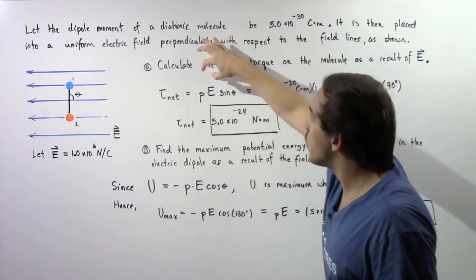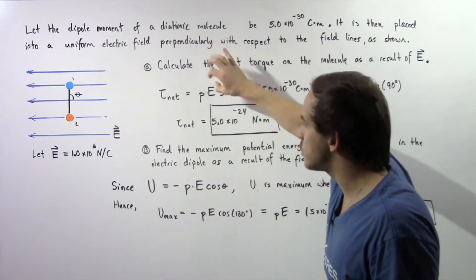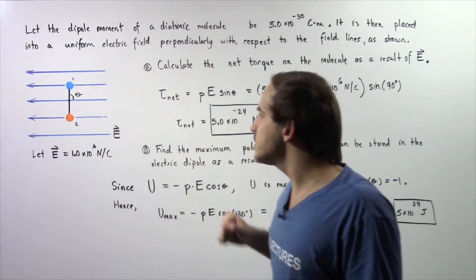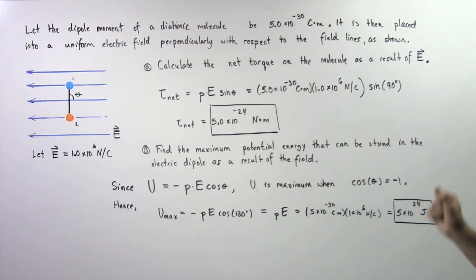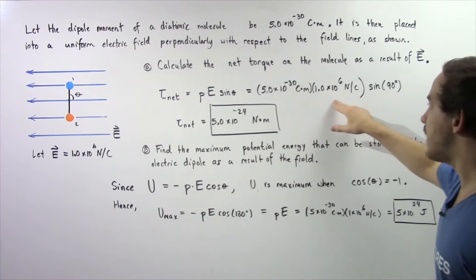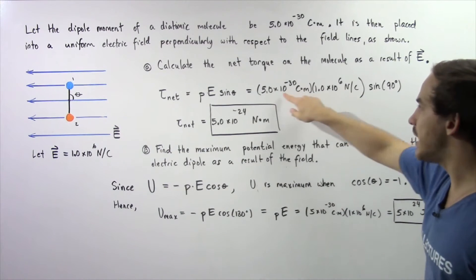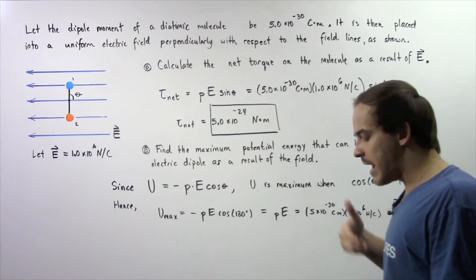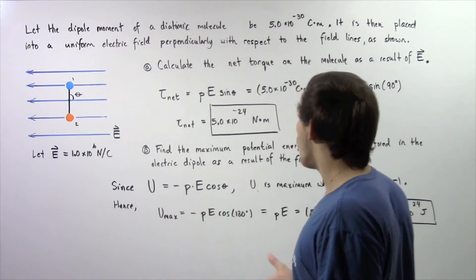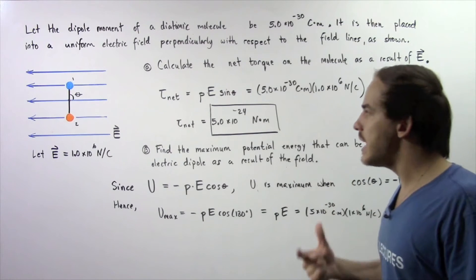So we have our electric dipole moment P which is given to be this quantity, our electric field is given to be this quantity and our angle initially is 90 degrees. So we plug our values in, sine of 90 is 1, so we simply multiply these two quantities and we get 5.0 times 10 to the negative 24 newton-meters as the net torque.